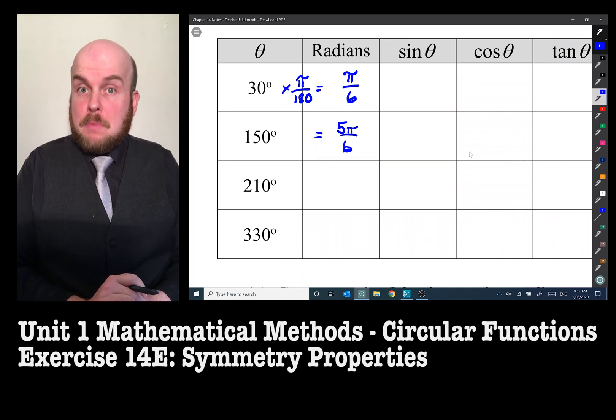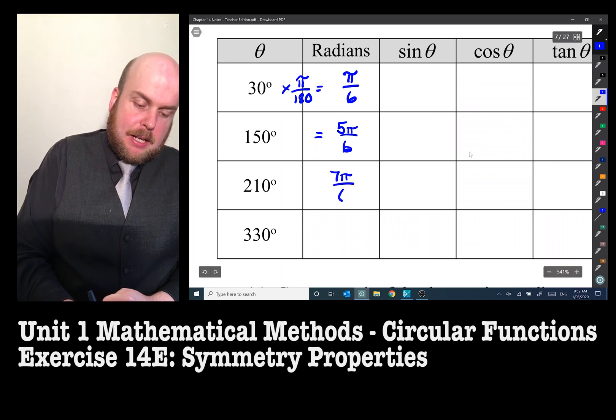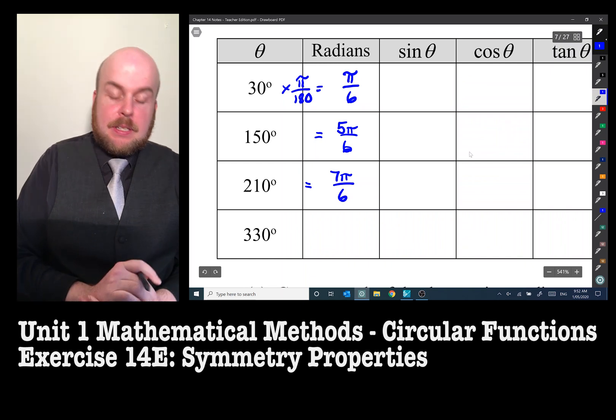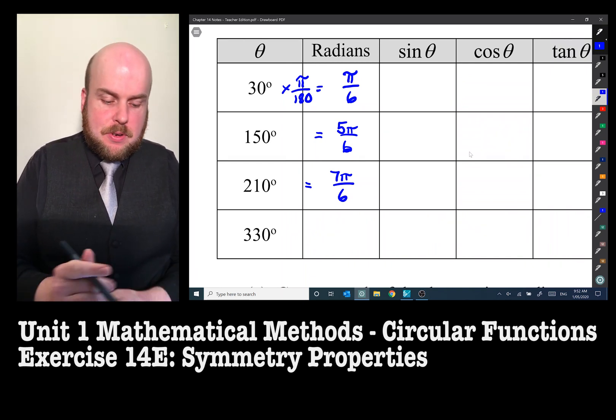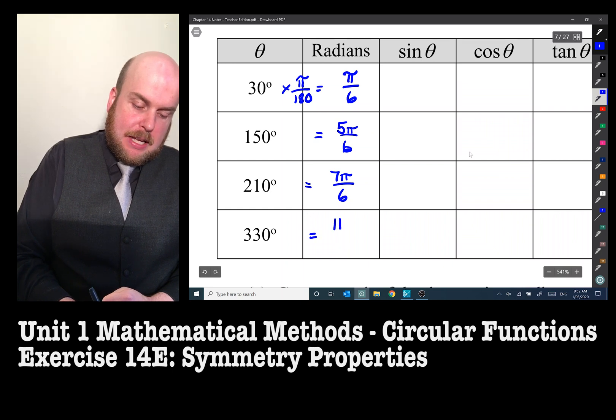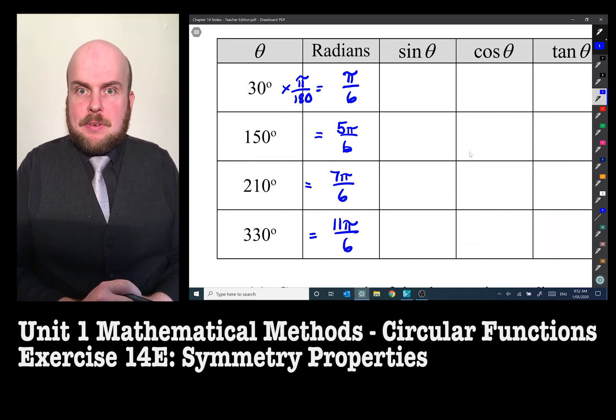210 multiplied by π over 180 is going to get us 7π on 6, and 330 times π over 180 is going to be 11π over 6.